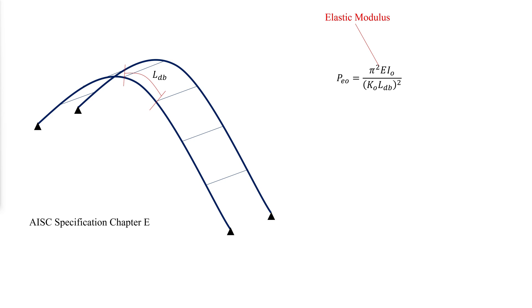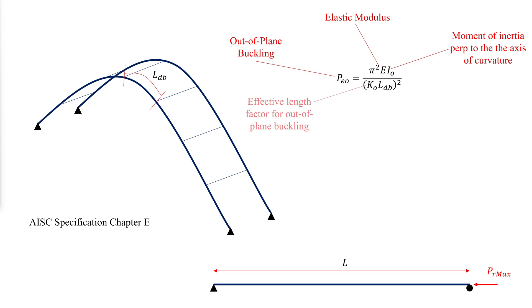In the AISC specification equation, the developed length between brace points must be used instead of the straight member unbraced length. The elastic out-of-plane critical buckling load is calculated in the following equation, where I_o is the moment of inertia perpendicular to the plane of curvature, and K_O is the effective length factor for out-of-plane buckling.